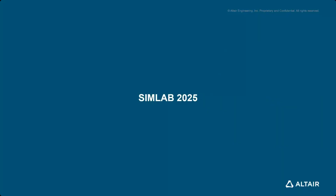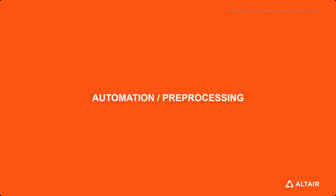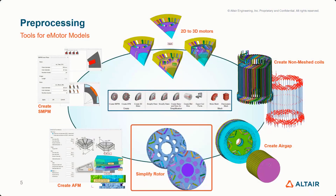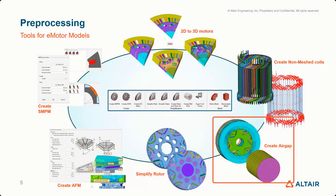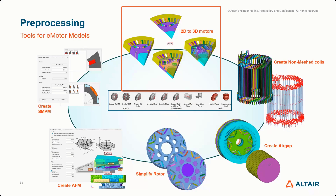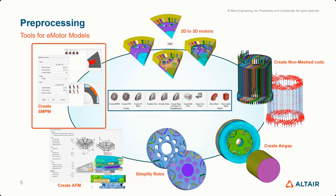Let's start with Flux in SimLab, especially with the preprocessing automation tools. For e-motor designers, many semi-automatic tools are already available, such as automatic creation of the axial flux machine model with parameters. The simplified rotors allow adding air volumes and creating an air gap for 3D models to enclose the rotor part in the air box needed for rotational movement. You can also easily create non-meshed coils from the cut of the winding, and 2D models can be extruded to 3D with or without skew. We added the tool 'Create SM Preham Inner Rotor 2D', offering the possibility to create the model by choosing the inner magnet part, the outer slot part, the diameter, and the slot-pole number — very similar to the FluxMotor workflow.